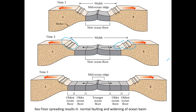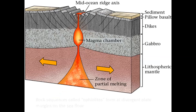Those stair-step features are caused by the ocean floor breaking. We see the divergent forces at work — tensional forces are at work. When you have crust that breaks due to tensional forces, the type of fault that occurs is a normal fault. So normal faulting is quite common at divergent plate boundaries.